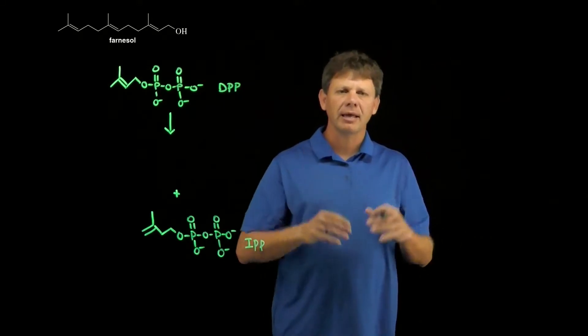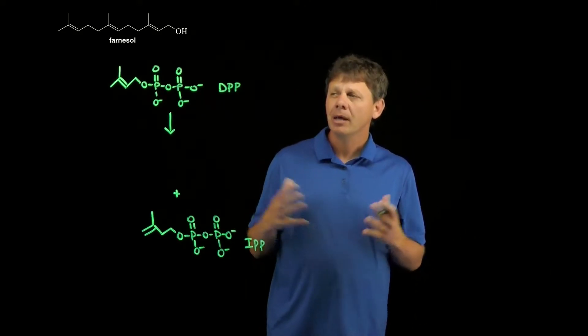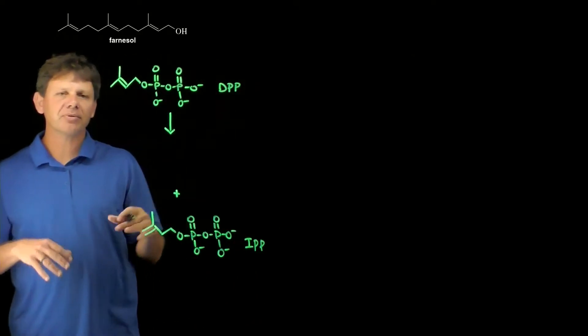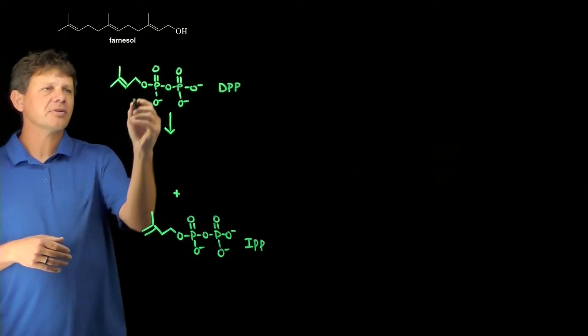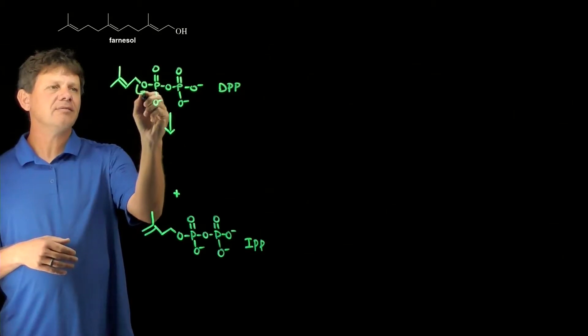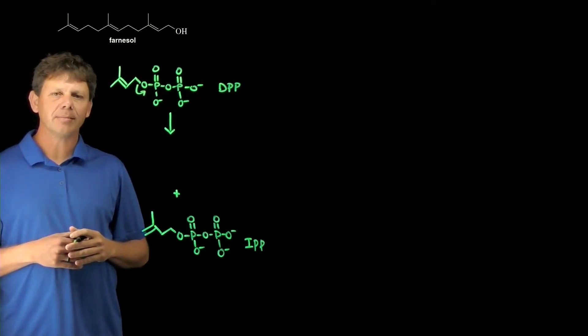Essentially, what we know is that DPP represents a good electrophile in these reactions because this group can leave to make a relatively stable carbocation.